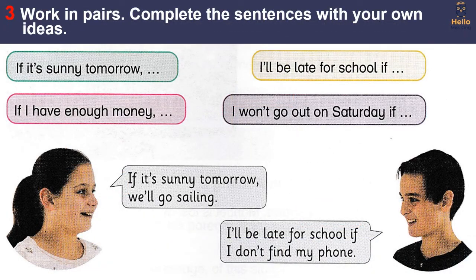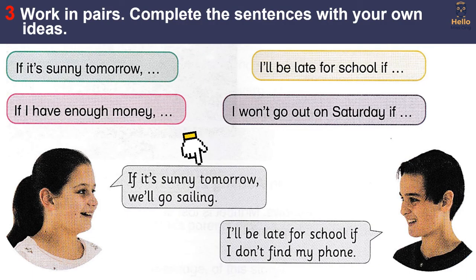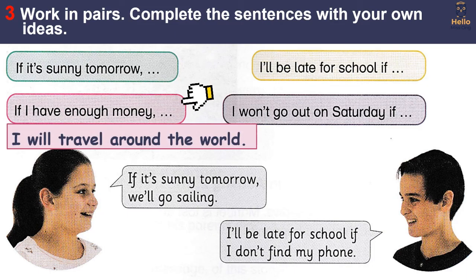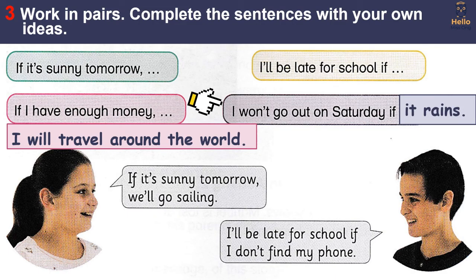Activity 3: Work in pairs. Complete the sentences with your own ideas. For example: if it's sunny tomorrow, we'll go sailing. I'll be late for school if I don't find my phone. If I have enough money, I will travel around the world. I won't go out on Saturday if it rains.